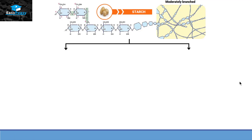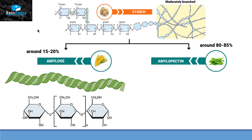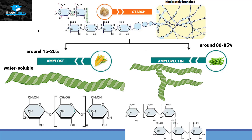Starch can be of two types: amylose or amylopectin. In plants, amylose concentration is around 15 to 20 percent, while amylopectin is present around 80 to 85 percent. Amylose is made up of unbranched glucose units and is soluble in water. Amylopectin, on the other hand, is branched and water insoluble, with branching occurring after every 20 subunits.